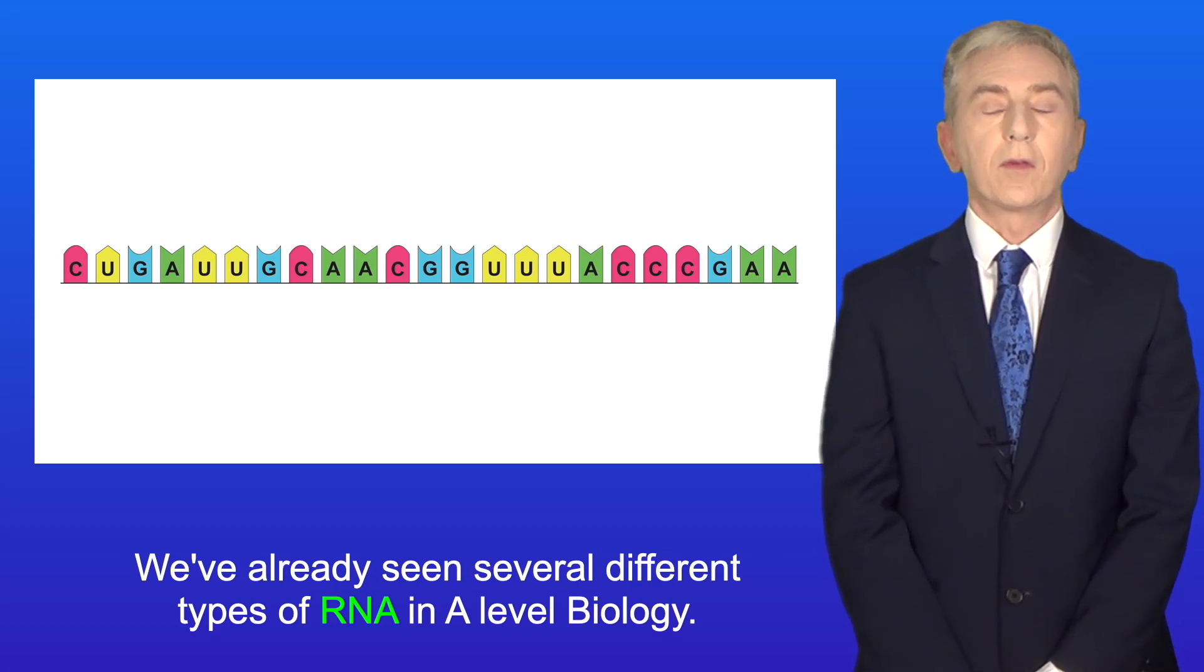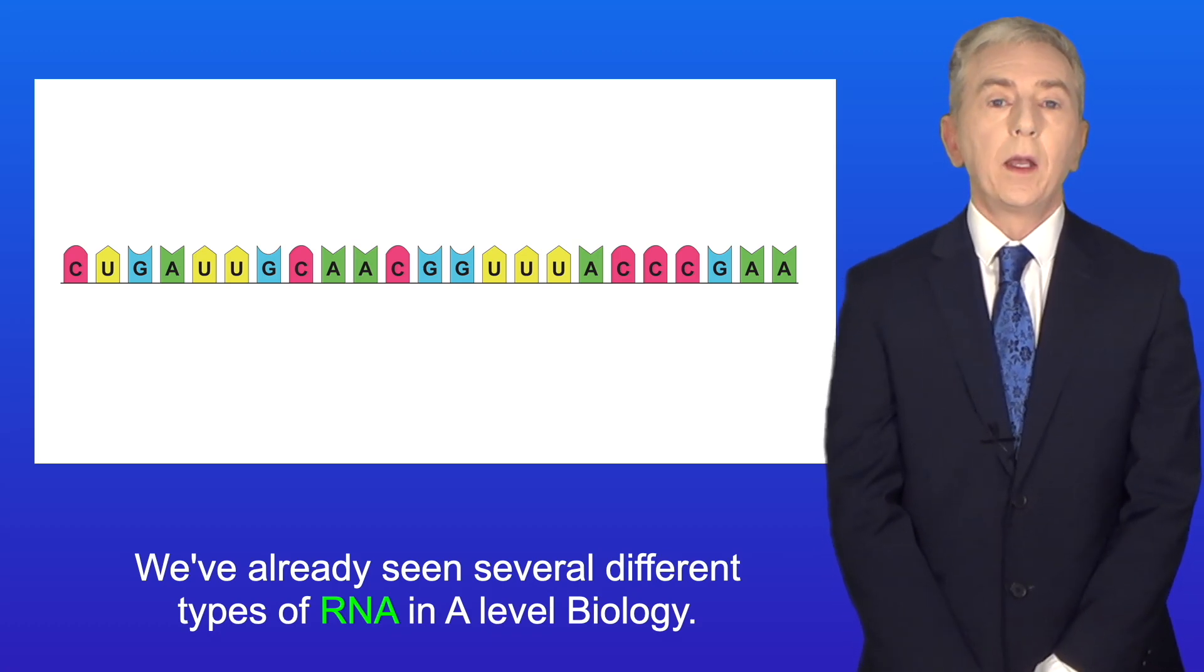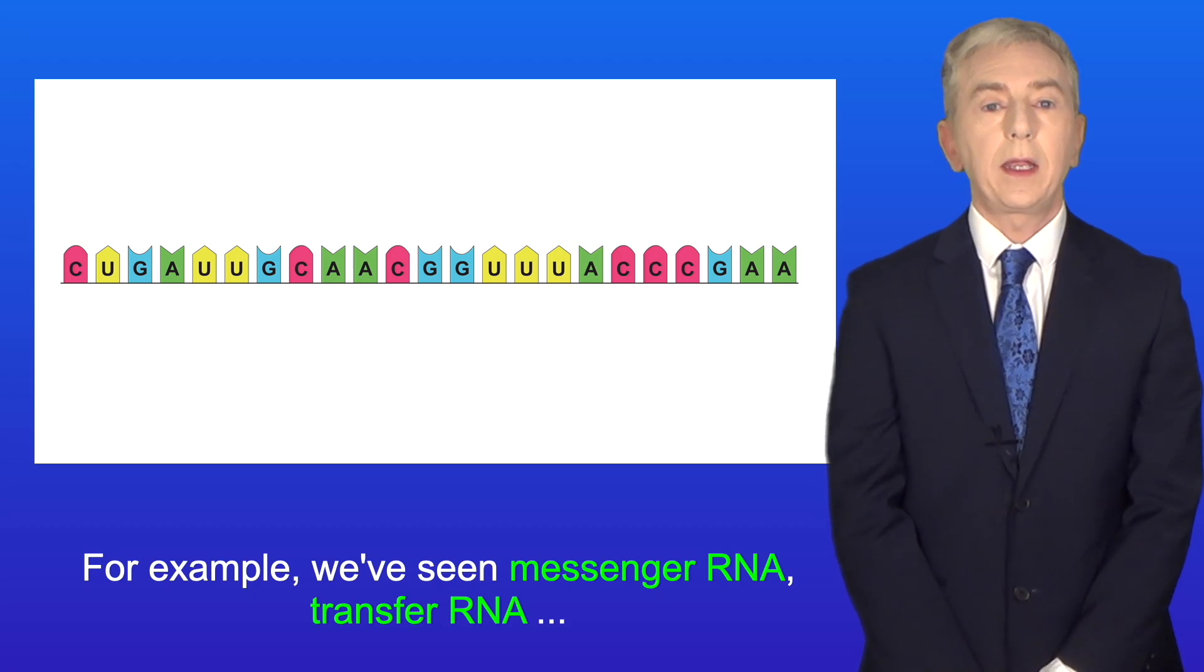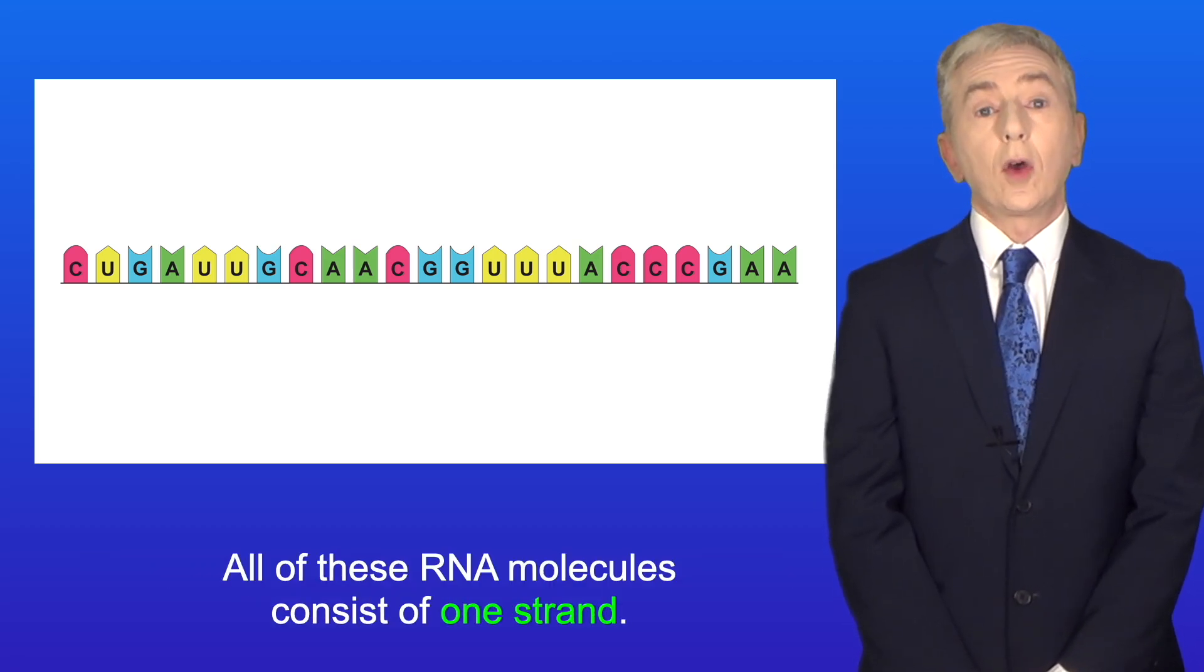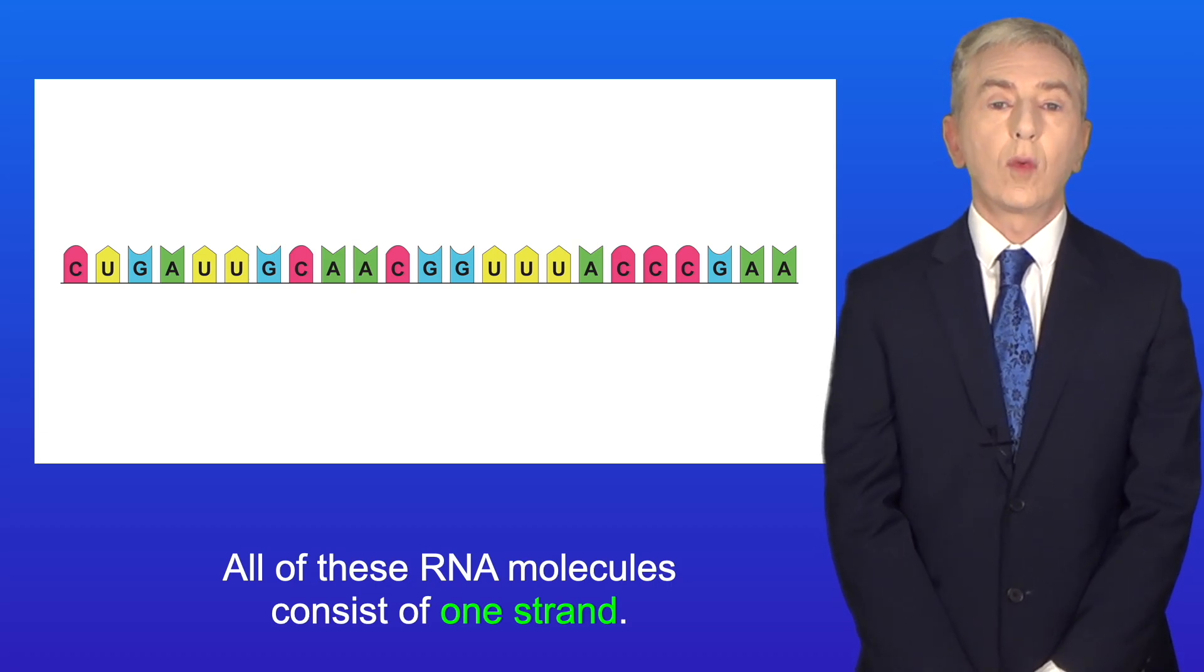Now, we've already seen several different types of RNA in A-level biology. For example, we've seen messenger RNA, transfer RNA, and ribosomal RNA. And all of these RNA molecules consist of one strand.